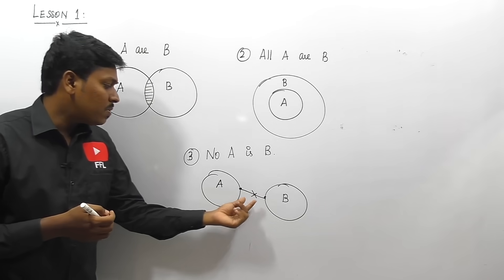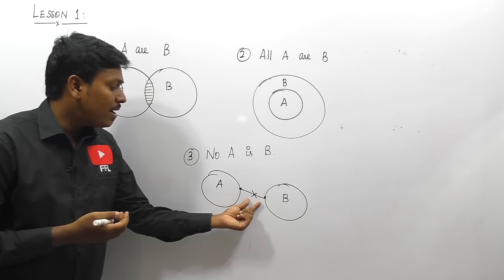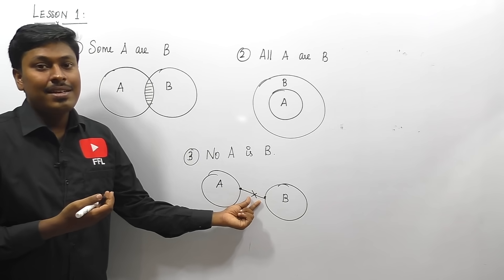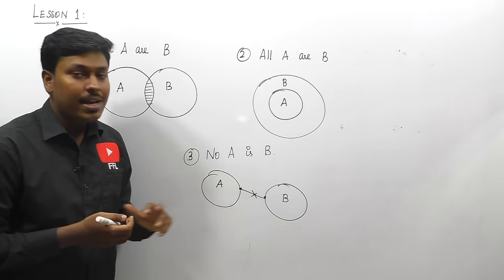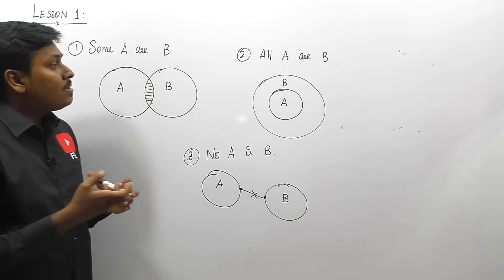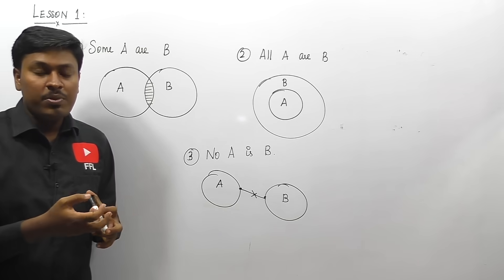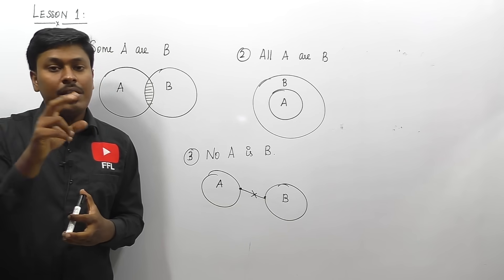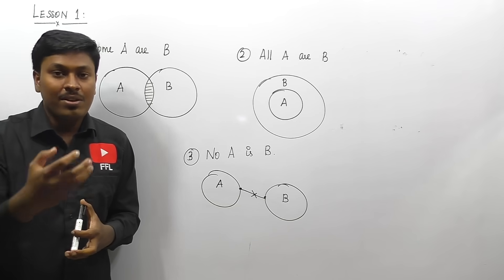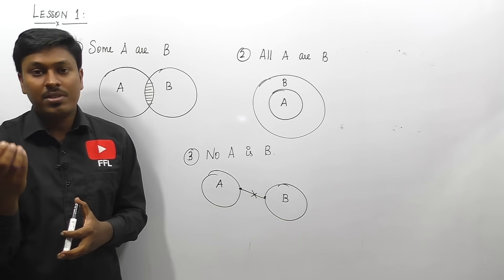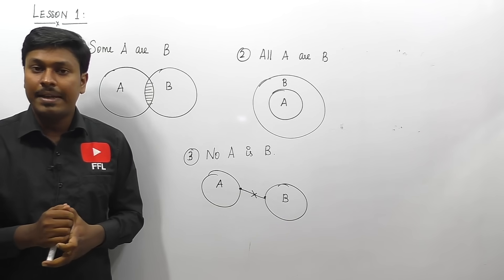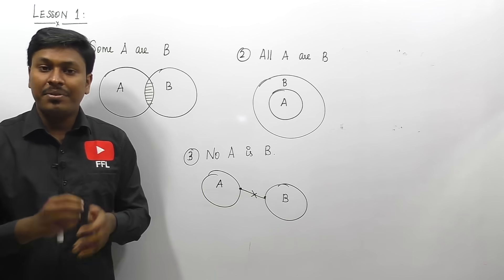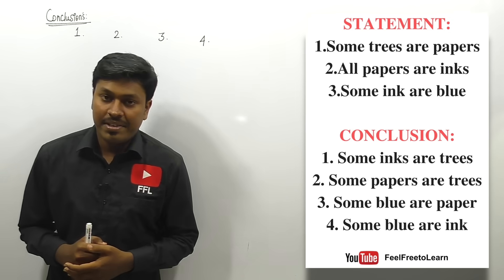Some students won't draw the line between the separate circles — it is your wish. But if you see a line in any question, it indicates there is no connection between A and B. In every syllogism question, you will find a statement and a conclusion. Using the statement, draw the Venn diagram, then check whether the conclusion is true or false using that diagram.